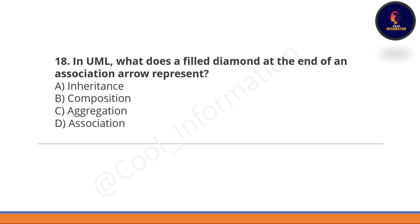Next question: in UML, what does a filled diamond at the end of an association arrow represent — inheritance, composition, aggregation, or association? Option B is correct — composition is represented by a filled diamond at the end of an association arrow.